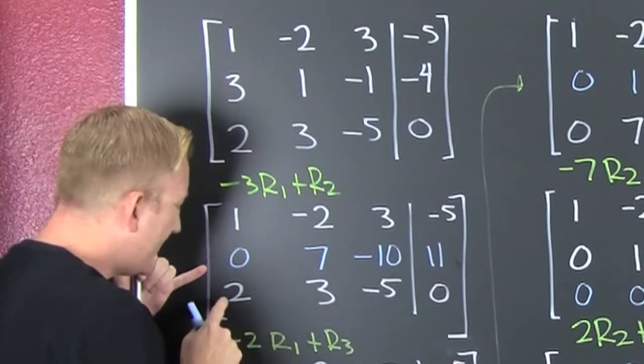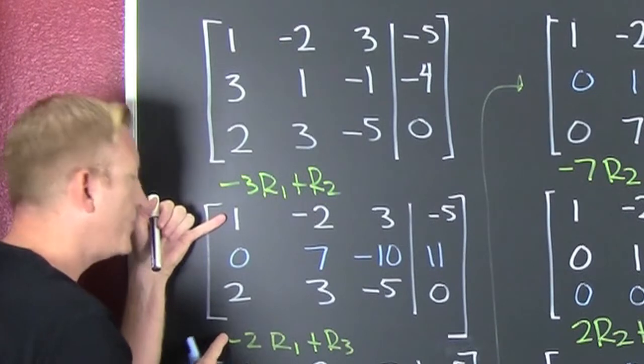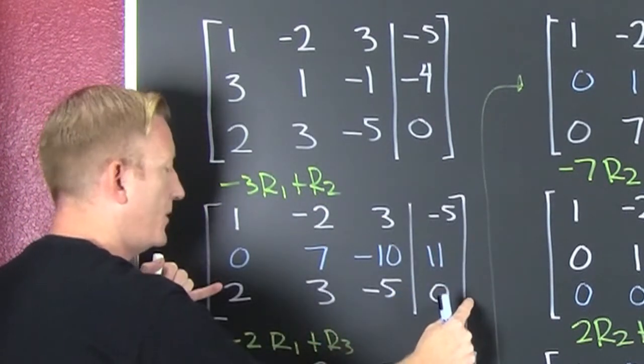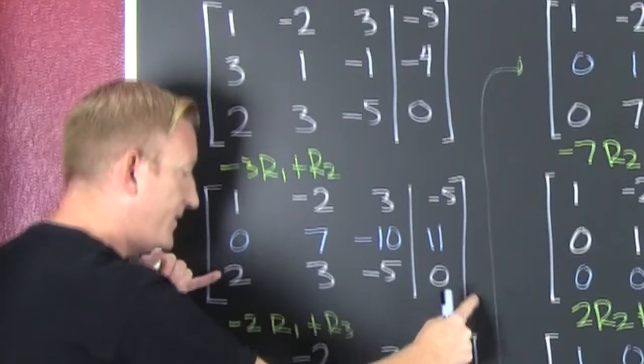Then what? We need to kill that too. We multiply that one by the additive inverse, which is minus 2. So we multiply that entire row and add it to that row.